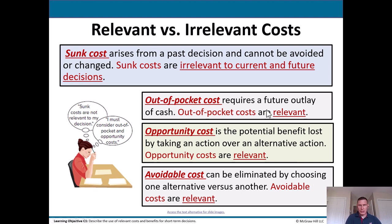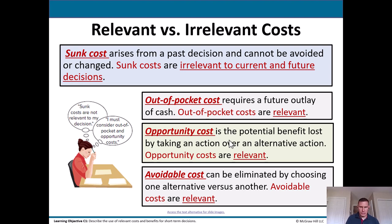An out-of-pocket cost requires a future outlay of cash, so because it's in the future and not the past, these are relevant. Opportunity cost is the potential benefit lost by taking one action over an alternative action, so opportunity costs are always relevant.